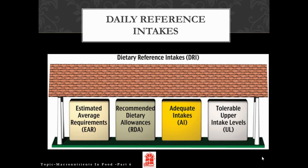Each DRI value is derived in a different way. The estimated average requirement for a nutrient is determined by a committee of nutrition experts who review the scientific literature to determine a value that meets the requirements of 50% of people in their target group within a given life stage and for a particular gender. The requirements of half the group will fall below the EAR and the other half will be above it. For each nutrient, a specific bodily function is chosen as the criterion. For example, the EAR for calcium is set using the criterion of maximizing bone health, meeting the bone health needs of half the population.